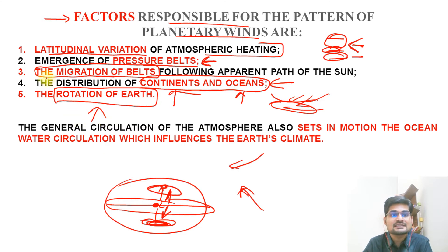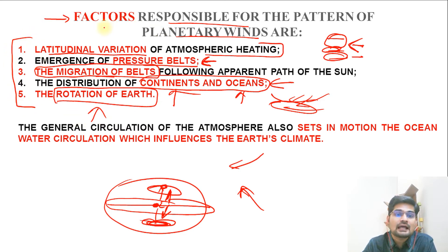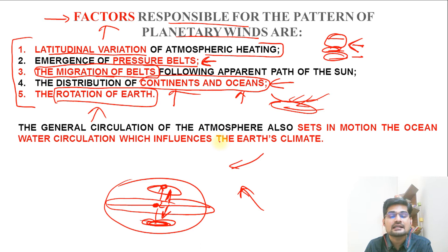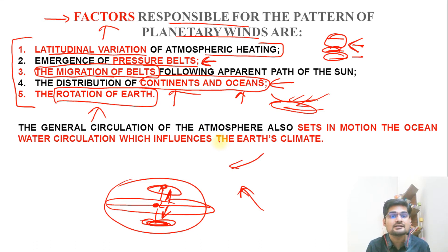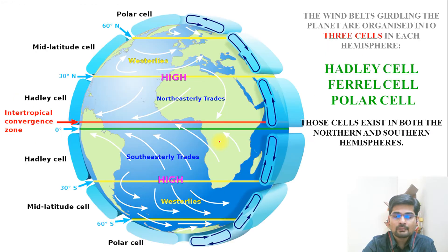So these are the five factors that govern the direction, intensity, and pattern of wind movement that we study in atmospheric circulation.